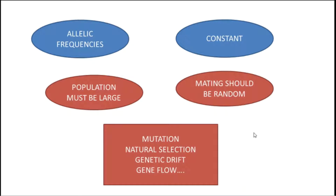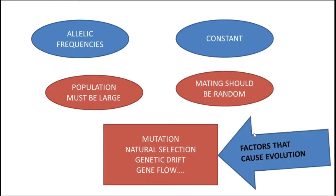The third condition essential for the maintenance of consistency in allelic frequencies is the absence of disturbing factors such as mutation, natural selection, genetic drift, gene flow, etc. These factors are considered the elemental forces of evolution. If these factors occur within a population, then the population must undergo evolution and the allelic frequencies must change, so these factors should be absent.